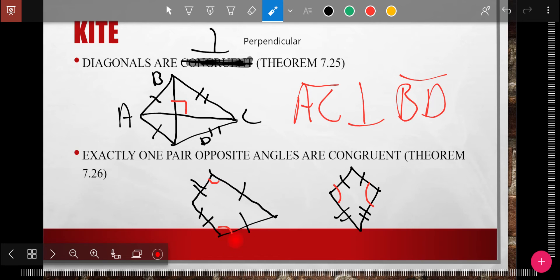And it says exactly one pair of opposite angles are congruent. Exactly one pair of opposite angles are congruent, and they're the ones that are not between the congruent sides. So this side is congruent to that side, that's the angle in between. So between the two sides here that are not congruent, that angle, and the two sides here that are not congruent, this angle, those two would be the same.